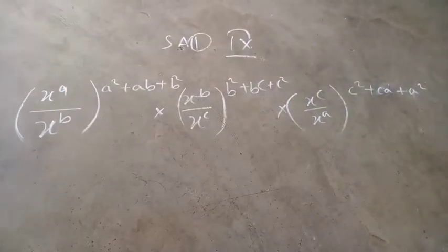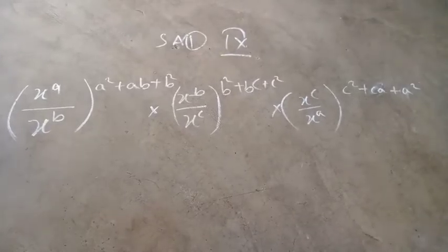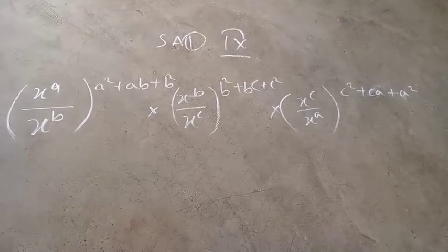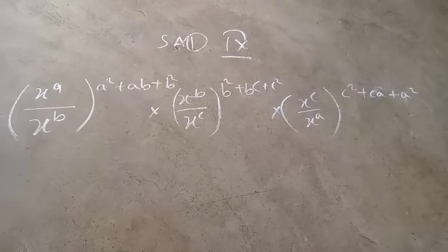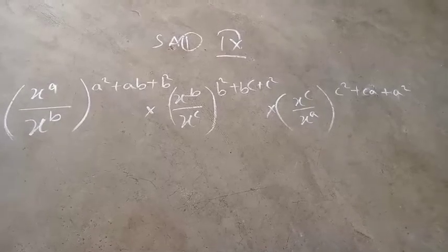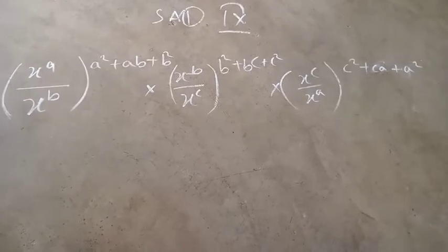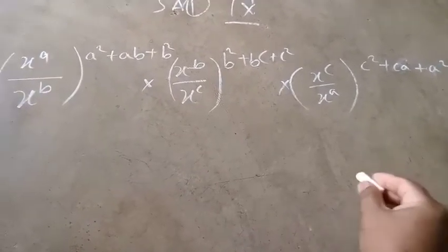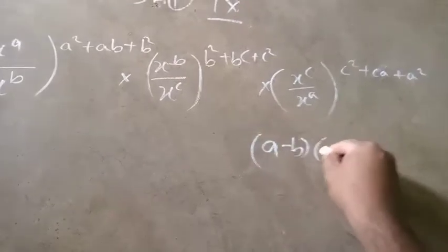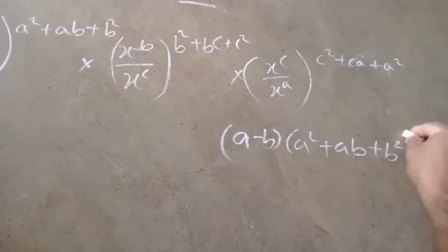Now we have an important question: x to the power a by x to the power b, whole to the power a squared plus ab plus b squared, into x to the power b by x to the power c, whole to the power b squared plus bc plus c squared, into x to the power c by x to the power a, whole to the power c squared plus ca plus a squared. Now, x to the power a by x to the power a minus b, whole into a squared plus ab plus b squared.